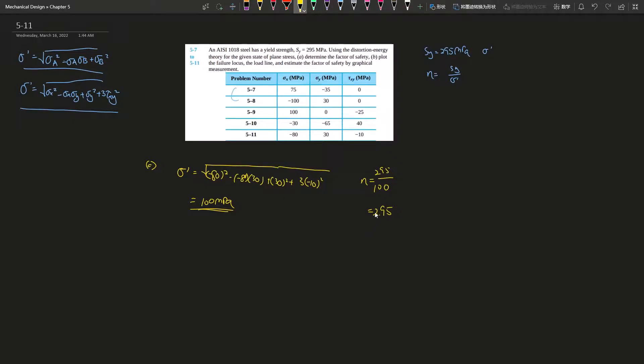Now to plot it, we have to find the principal stress because on this graph we have two points, σ_a and σ_b.